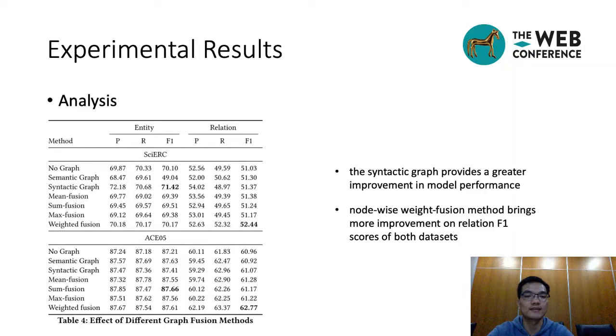Compared to max-fusion, min-fusion, and sum-fusion, the node-wise-weighted-fusion method brings more improvement on relation F1 score.